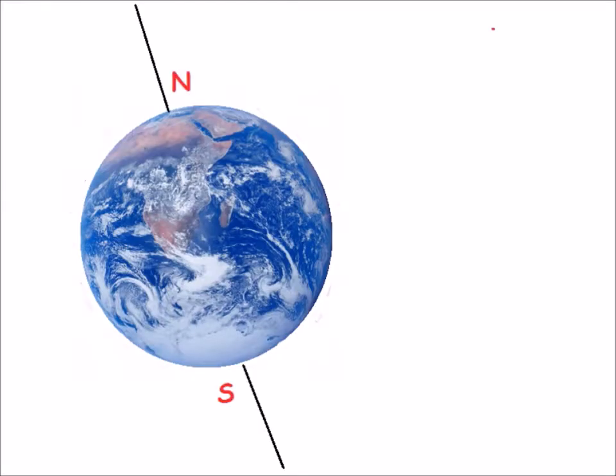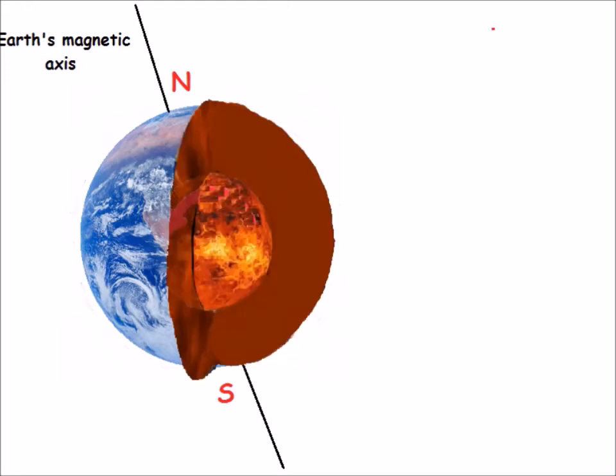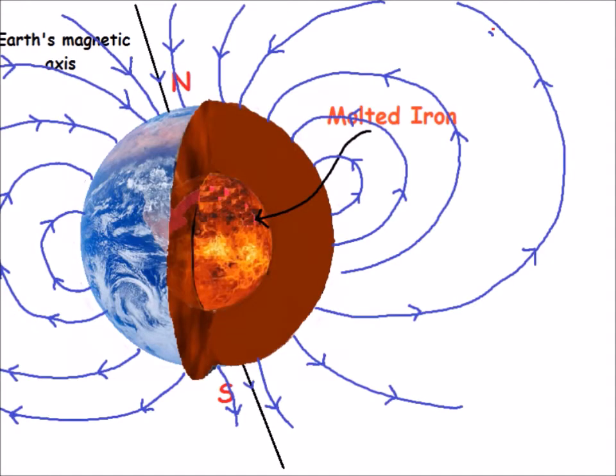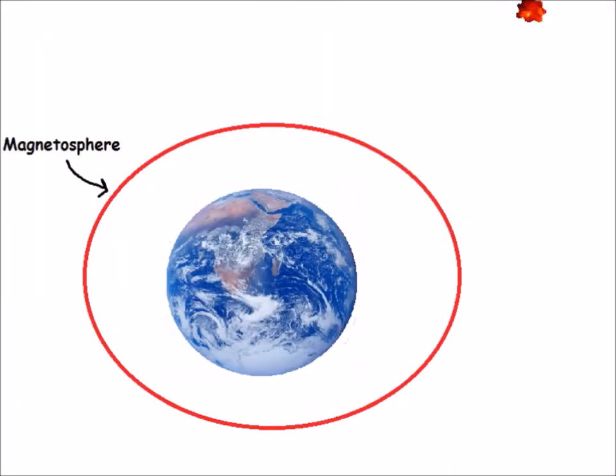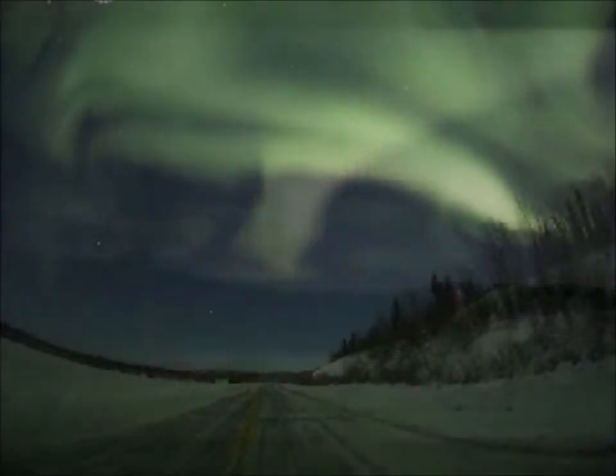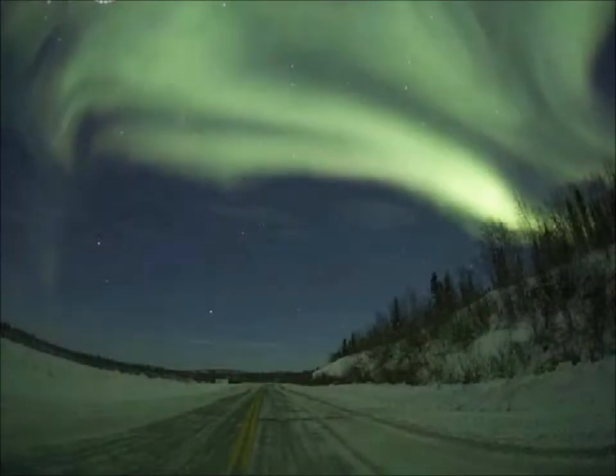Earth itself is a giant magnet. Deep inside Earth is a pool of molten iron which creates a vast magnetic field called the magnetosphere. It does an important job by stopping solar particles from the Sun from hitting Earth. When these particles hit the magnetosphere, they create colorful lights called auroras.